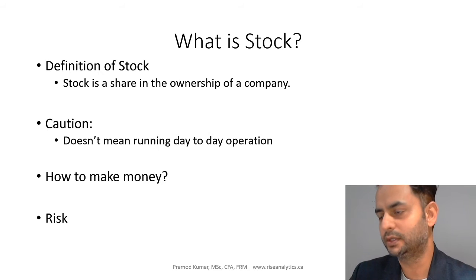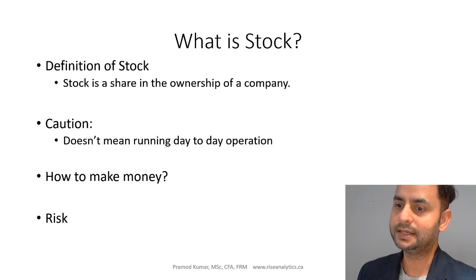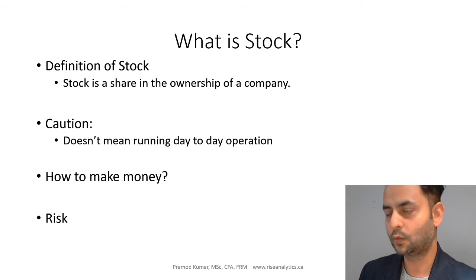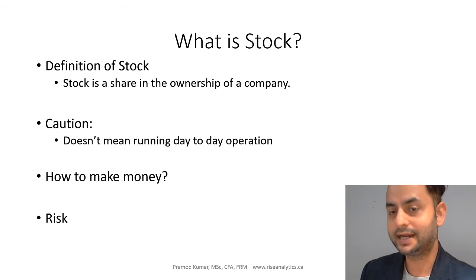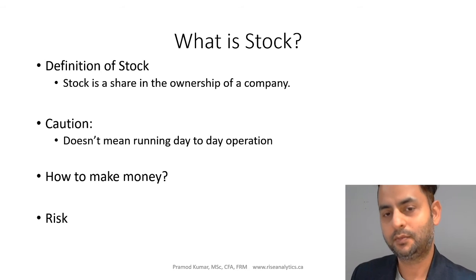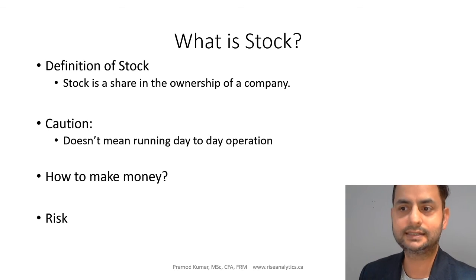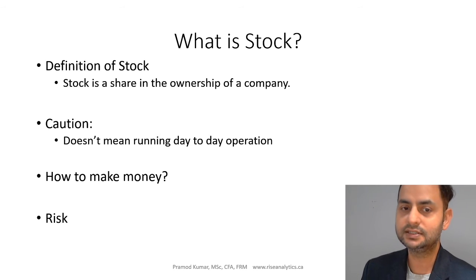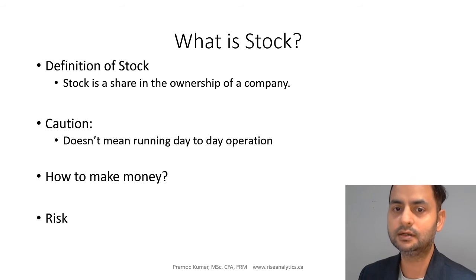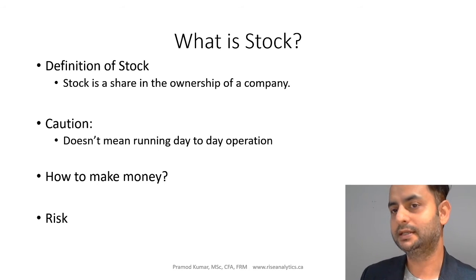When we buy the stock, we take ownership of a piece of the company. So how do we get money? We get money when the company makes money. If the company pays a dividend, we get a return as a dividend — that's one way. Another way is price appreciation: suppose you buy a share of a company at ten dollars and after some time it doubles to twenty dollars. You sell, and even if the company never paid a dividend, you earn ten dollars on that one share.